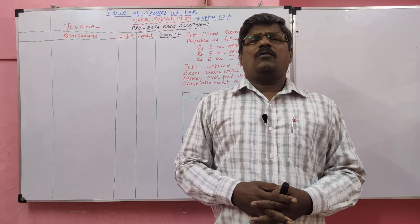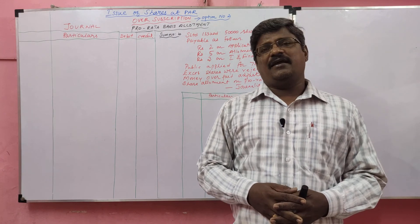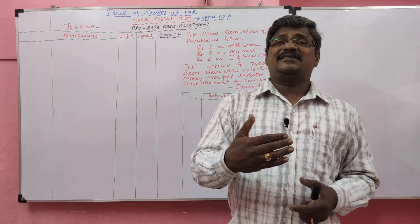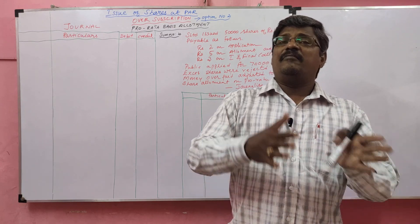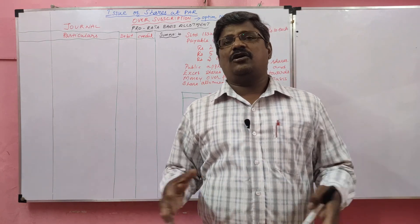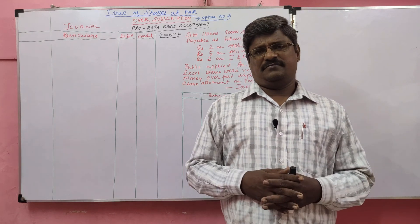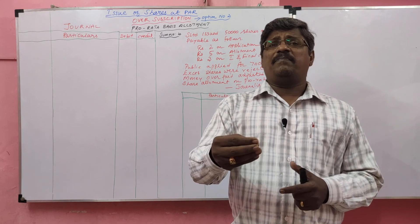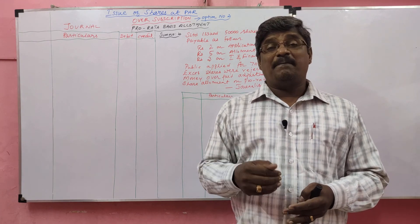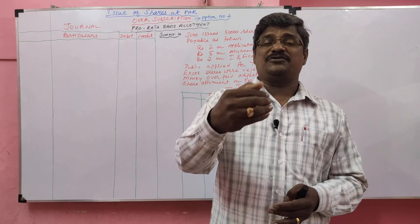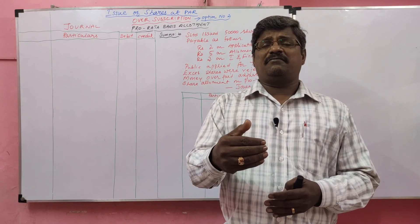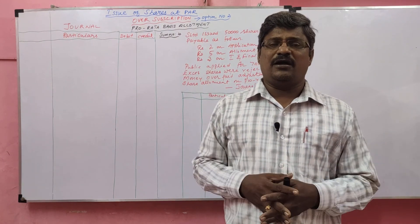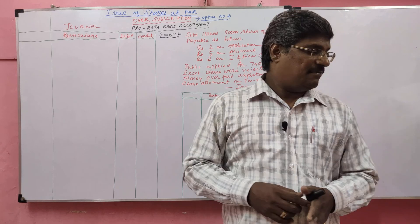So what do you mean by pro-rata basis allotment? Sometimes a company receives more applications than issued shares. The excess shares are rejected but money is not refunded — it will be adjusted in the share allotment. In short, some applicants may apply for more shares but the company allots fewer shares to them. The remaining share application money is not refunded; it will be adjusted in the share allotment. That is called pro-rata basis allotment. Let me discuss this problem.